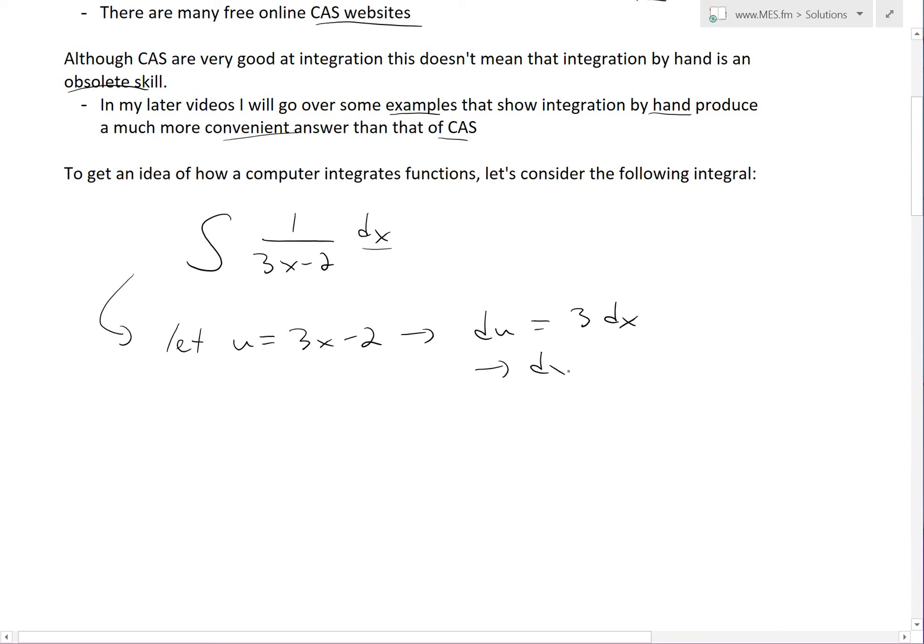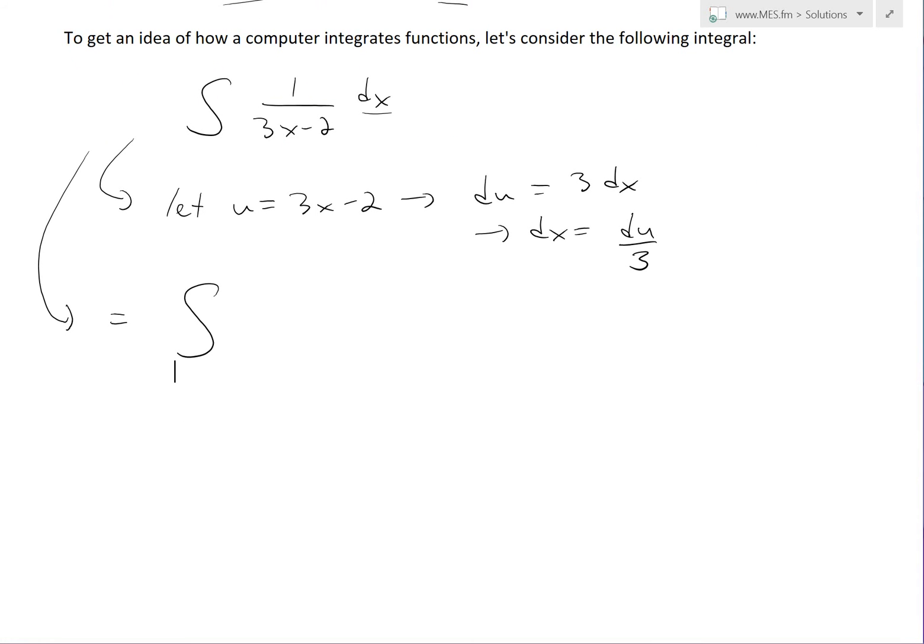equals to 3 dx. So dx equals to du over 3. So we could just simply plug this inside. So this equals to integral. So this is just the integral of now we have a 1 over u, which is this 3x minus 2. And now we have a dx, which becomes du over 3.